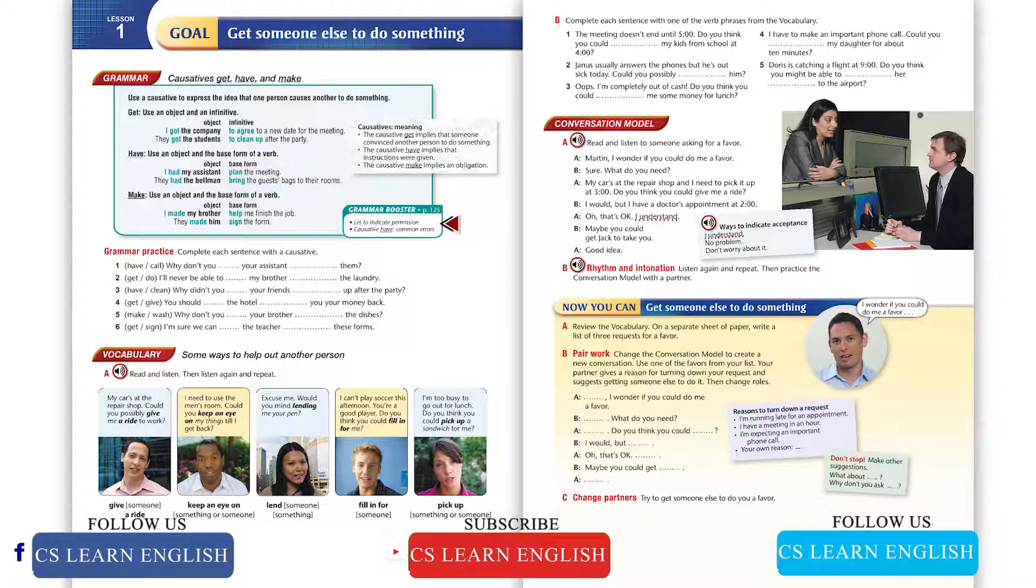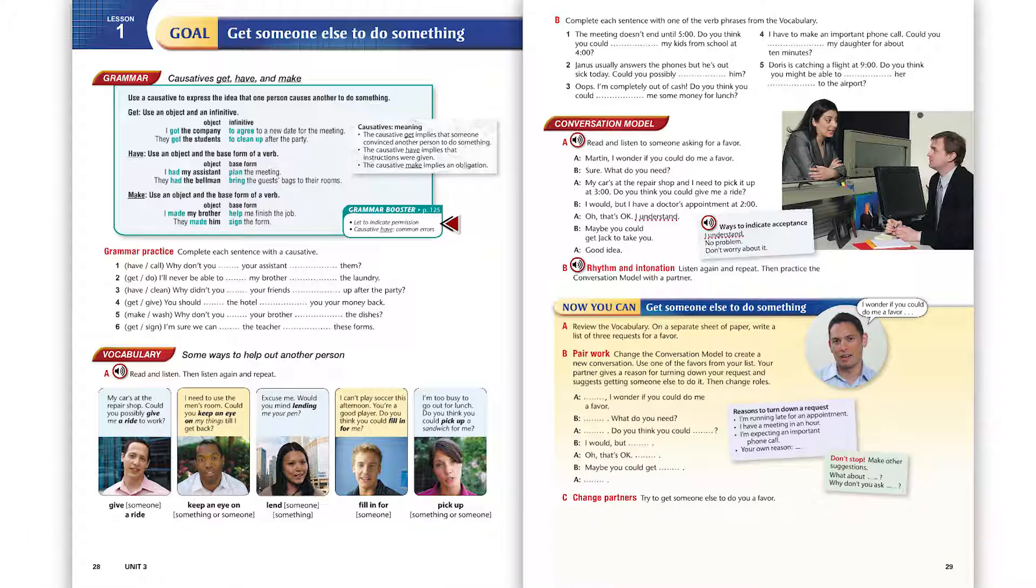Page 29, Conversation Model, Exercise A: Read and listen to someone asking for a favor. 'Martin, I wonder if you could do me a favor.' 'Sure, what do you need?' 'My car is at the repair shop and I need to pick it up at 3 o'clock. Do you think you could give me a ride?' 'I would, but I have a doctor's appointment at 2.' 'Oh, that's okay, I understand. Maybe you could get Jack to take you.' 'Good idea.'